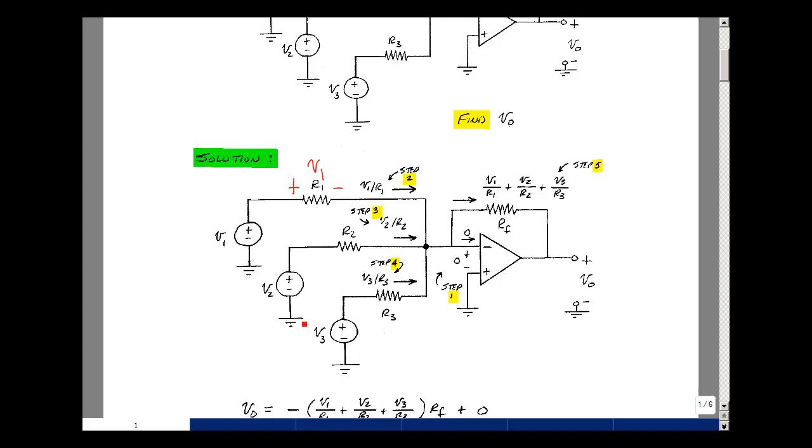The same is true for R2. Current flowing out of this terminal would have a value of the voltage across this resistor divided by the resistance. The rise in voltage is V2. The drop is the voltage across this resistor plus zero. This would be V2. And likewise, this would be V3.